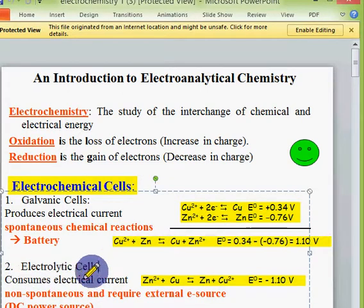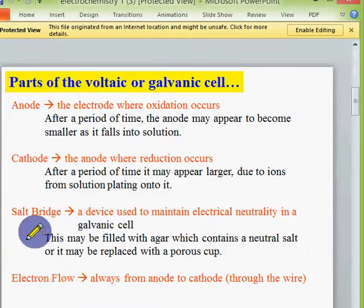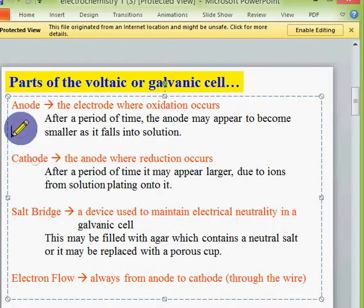In the electrolytic cell, external battery is required. Generally, in any cell, it has two different electrodes. One is the anode, another one is the cathode.